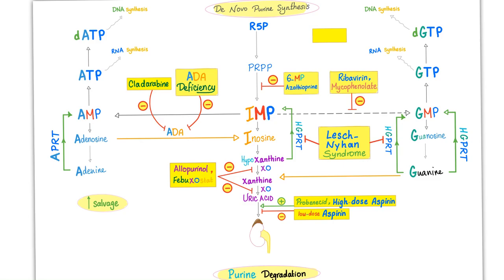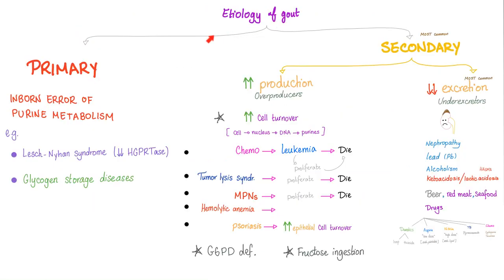Hyperuricemia is not synonymous with gout. Gout can be primary — an inborn error of metabolism — or secondary to something else. Secondary gout involves either increased production or decreased excretion of uric acid. Increased production can be due to increased cell turnover, chemotherapy, tumor lysis syndrome, myeloproliferative neoplasms, hemolytic anemia, psoriasis, G6PD deficiency, or fructose ingestion. Decreased excretion basically means your kidney is not functioning well.